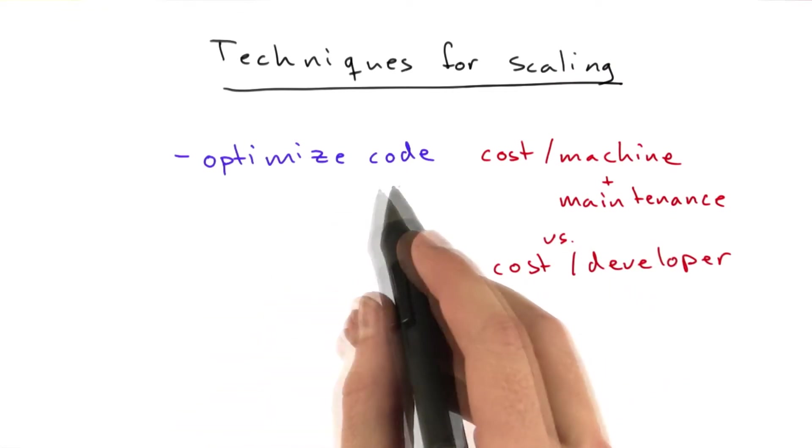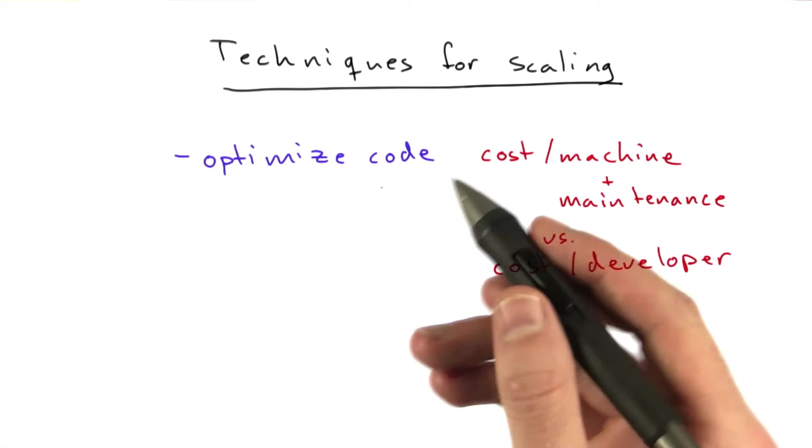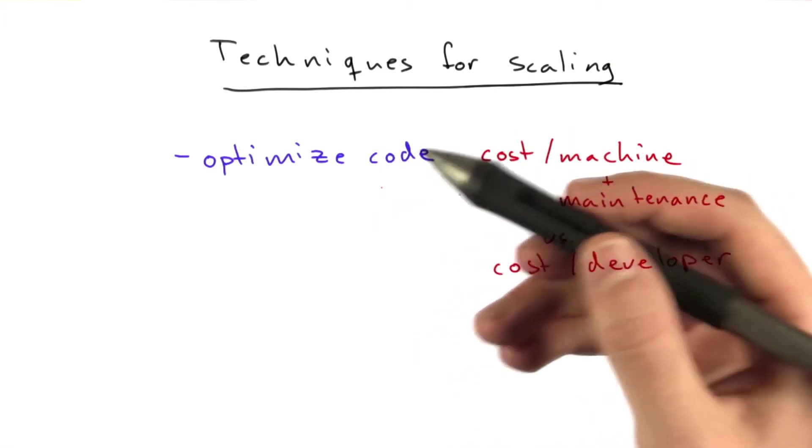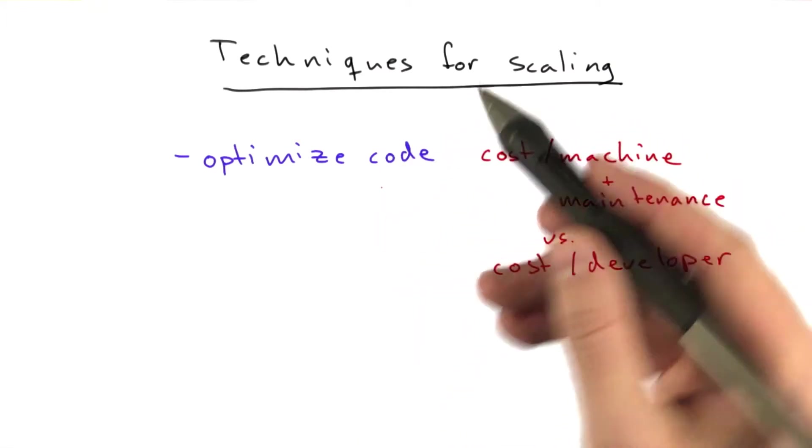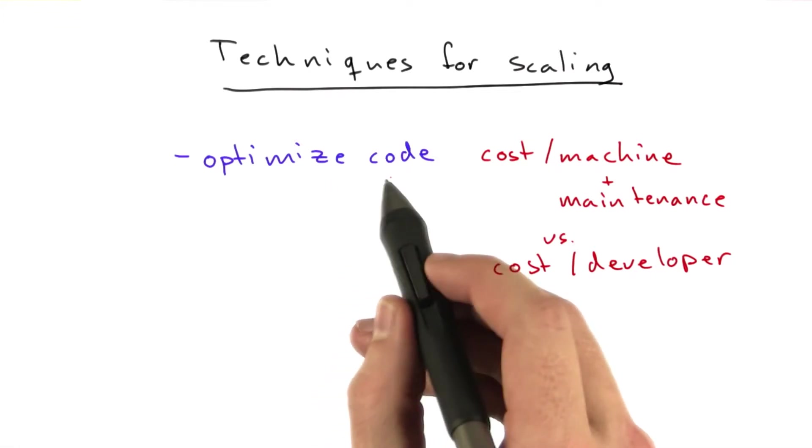We're not going to spend a whole lot of time on code optimization in this lecture, because that's really just learning how to program better. As you get more experienced programming, you'll be able to write better and tighter code.